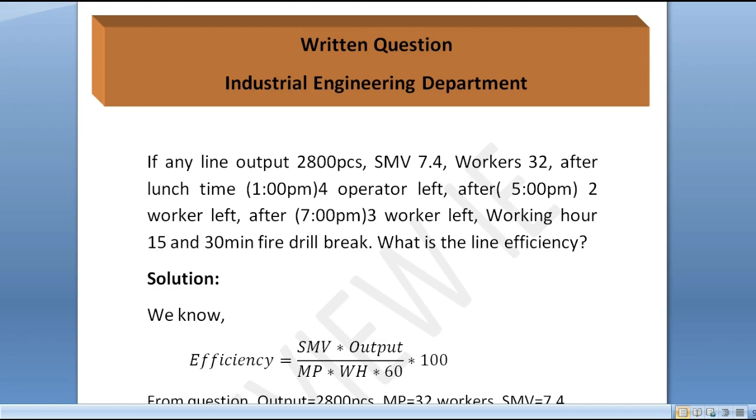This is an industrial engineering department question. If any line outputs 2800 pieces, SMV 7.4, workers 32, after lunch time 1:00 PM, 4 operators left. Generally in factory working hours, if you have a half-leave, you need to do a half-leave calculation.